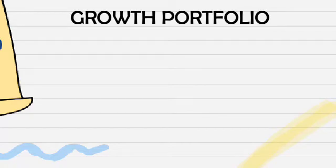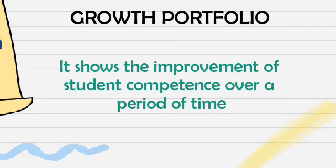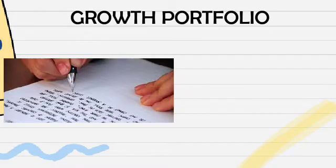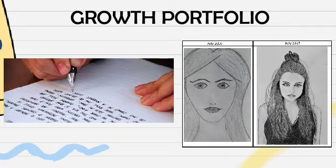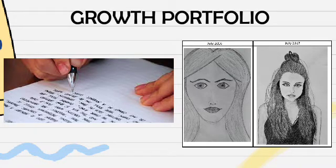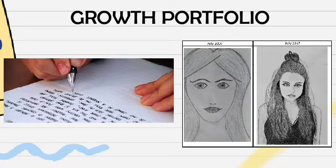The second main type is the growth portfolio, which shows the improvement of student competence over time. Examples include writing samples that show differences in skill, as well as drawings from the first part of the semester to the last week. This kind of portfolio is designed to provide teachers with authentic, individualized, student-centered growth measures that contribute to professional learning and development. It measures students' growth through work samples scored by a peer reviewer or the teachers themselves.